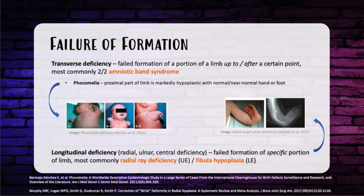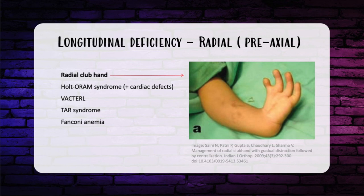Before discussing deficiencies, imagine your upper limb axis with your hand palm up — a straight line from your shoulder to your fingertip. Anything radial to that line is preaxial; anything ulnar is postaxial. With a radial deficiency, consider preaxial malformation. This ranges from shortening of the radius to complete absence. With radial club hand, you see shortening of the forearm with a hypoplastic or absent radius and radial deviation of the wrist. Treatment encompasses centralization of the carpus with soft tissue release, possible carpal resection, or ulnar osteotomy.